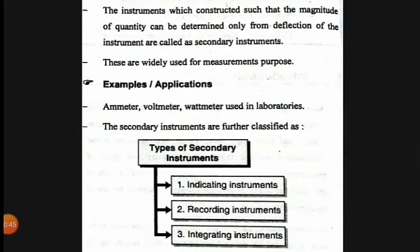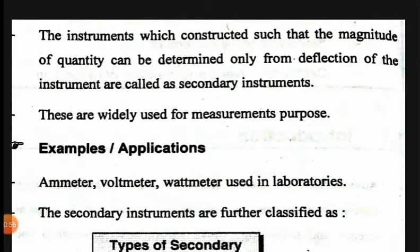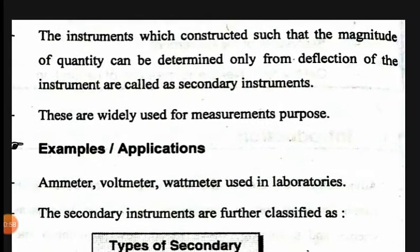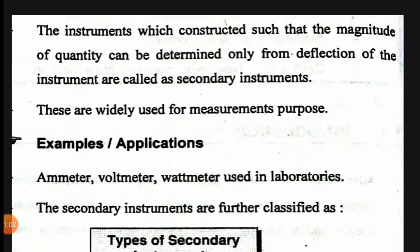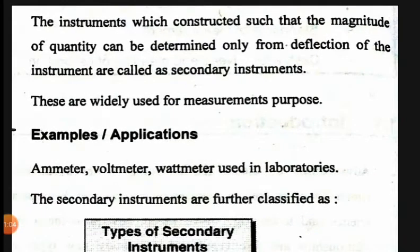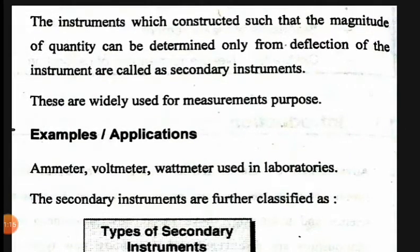The first one is the secondary instrument. The instruments which are constructed such that the magnitude of a quantity can be determined only from the deflection of the instrument are called secondary instruments. In other words, the quantity is determined only from the deflection.